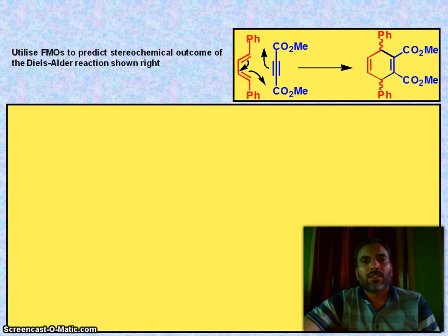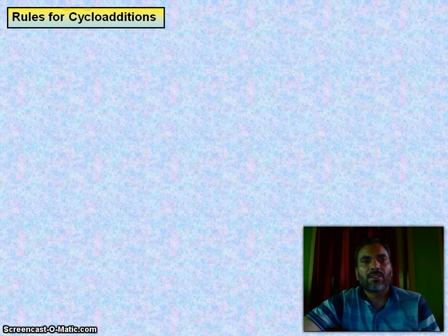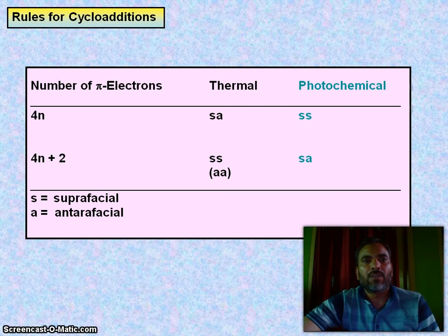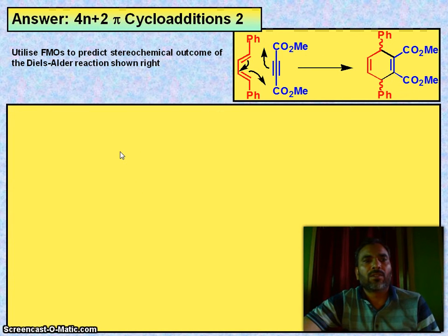Especially cycloadditions. So rules for cycloadditions: number of pi electrons, thermal and photochemical. If we have 4n, then superficial-interfacial or supra-supra. If you have 4n+2 pi electron system, supra-supra and supra-antra. S for superficial, A for interfacial. So 4n+2 pi cycloadditions.